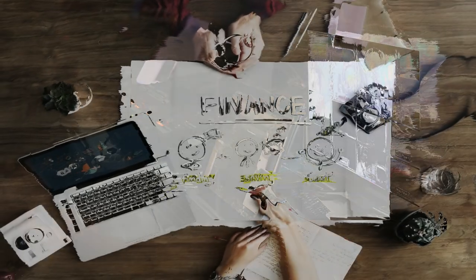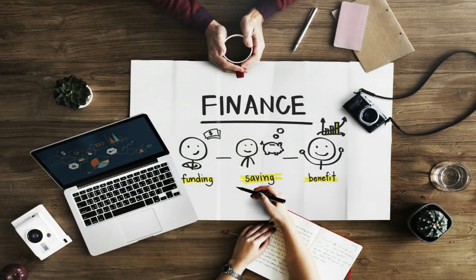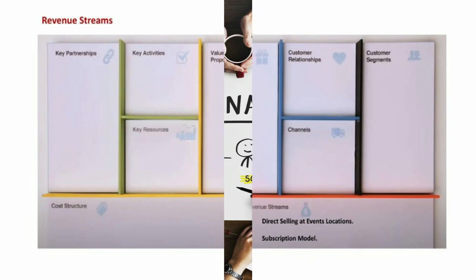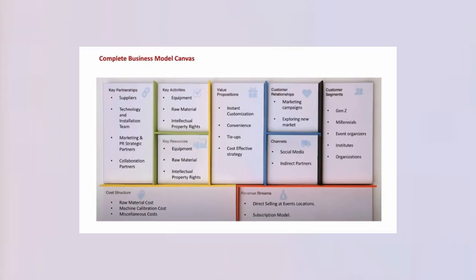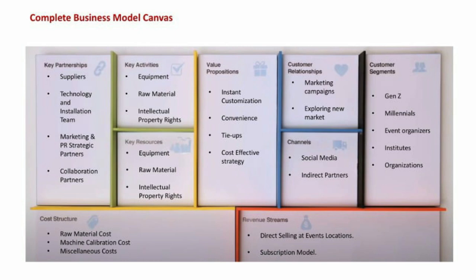After that, we will move towards the finance blocks for our venture. Here we will first discuss the revenue stream — direct selling and subscription model — and the overall cost structure. So with the business model canvas, we are trying to map our entire business model in one image, and it will cover all the parameters of our business venture.